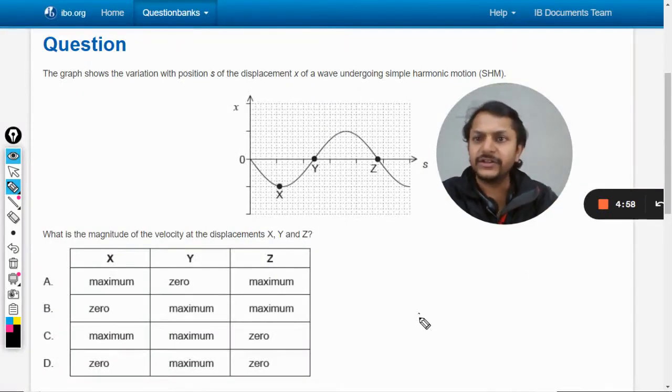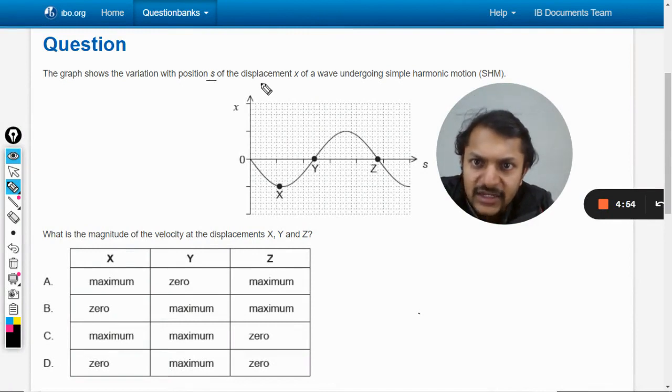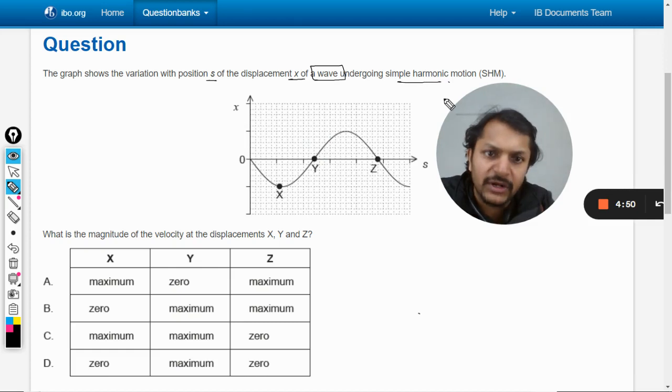Okay dear students, let us see what is there in this question. The graph shows the variation with position s of the displacement X of a wave undergoing simple harmonic motion. So what is the magnitude of the velocity at the displacement X, Y, and Z?